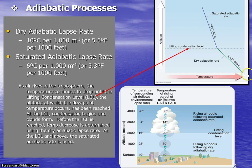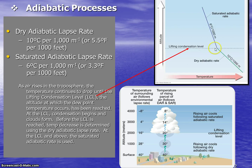As we've already discussed, as air rises in the troposphere, pressure is reduced and temperature drops. Until it reaches the lifting condensation level, it drops at the dry adiabatic rate. From that point on, if air continues to rise, it cools at the saturated adiabatic rate.